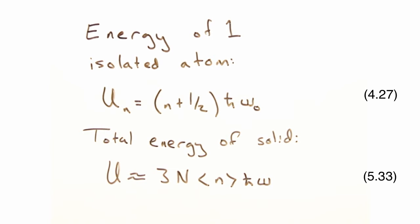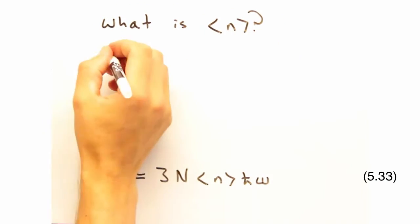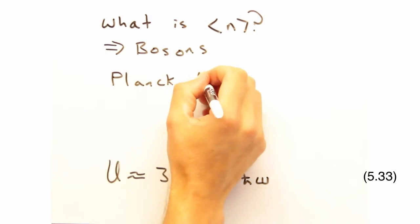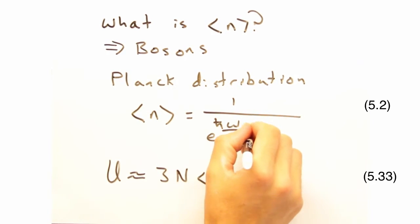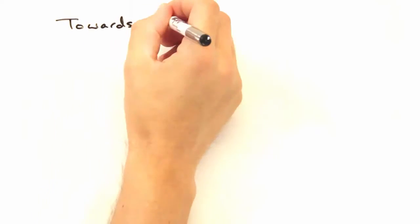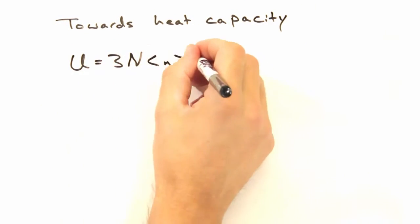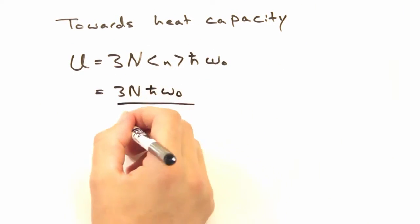And the expectation value of n is the population distribution, right? Exactly. Because we said phonons act like bosons, we're going to use the Planck distribution to describe how these modes are filled as a function of temperature. Plug this back in, and now we have an expression for the total energy in our Einstein solid.